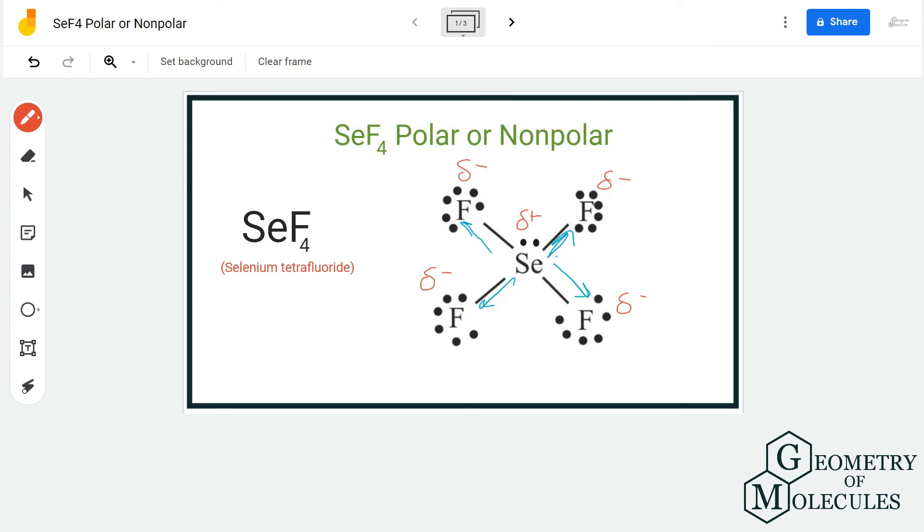And as there is a net dipole moment in this molecule, there will be poles formed in which regions around selenium atom will have partial positive charges and regions around fluorine atoms will have partial negative charges. As this molecule has poles, it is a polar molecule. So SeF4 or selenium tetrafluoride is a polar molecule.